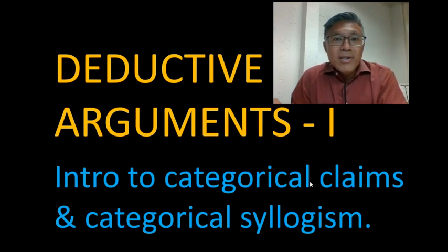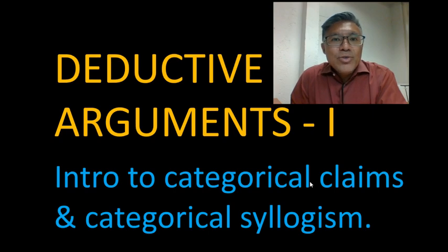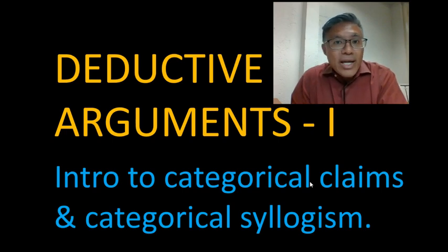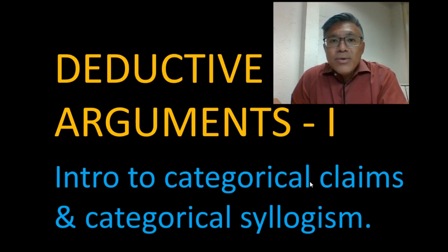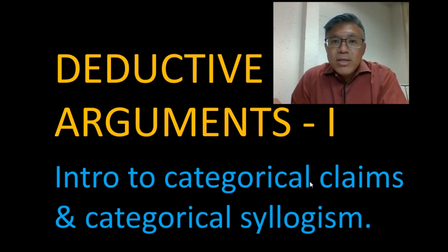Hi everyone. We've discussed deductive arguments in the past and contrasted them to inductive arguments, so hopefully we have a sense for what the difference is. But as you've seen in examples in class, and in particular our quiz and midterm, there are some arguments that sound like they're deductive, where the premises sound like they prove the conclusion, but in fact they don't. We can be fooled by the way something is presented, the wording of a premise, and believe that it necessarily leads to certain conclusions. But upon closer inspection, if we think really carefully about it, we realize they don't.